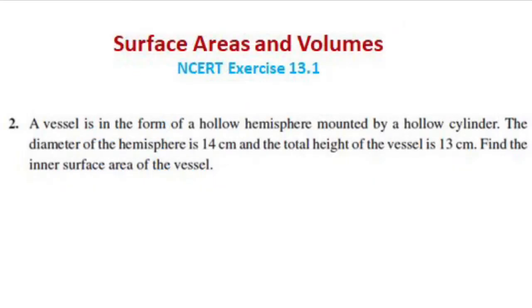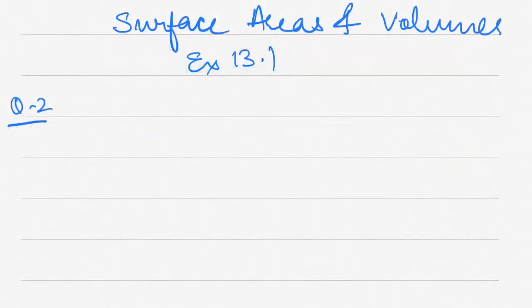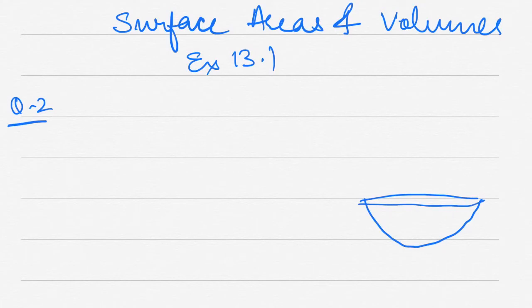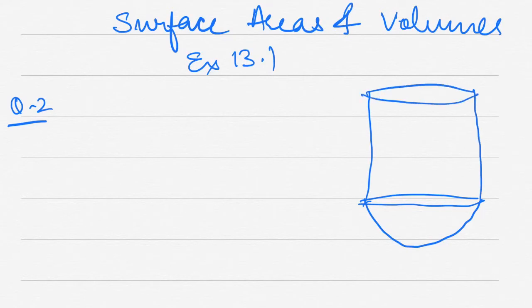Moving to question 2. A vessel is in the form of a hollow hemisphere mounted by a hollow cylinder. The diameter of the hemisphere is 14 centimeter and the total height of the vessel is 13 centimeter. Find the inner surface area of the vessel. Let us draw a figure with a hollow hemisphere at the bottom mounted by a hollow cylinder on top.